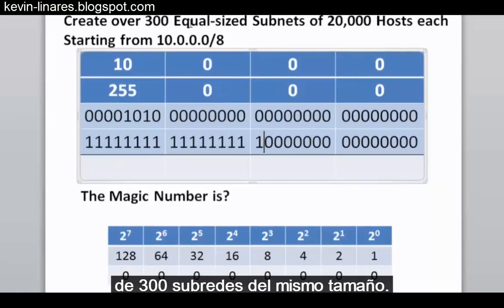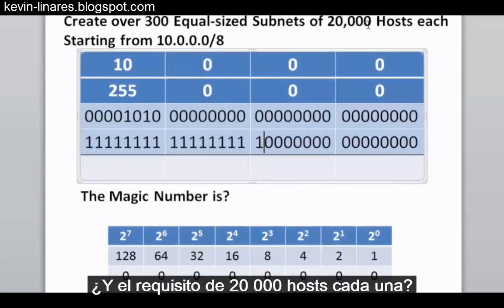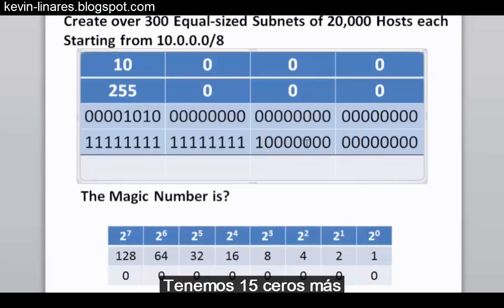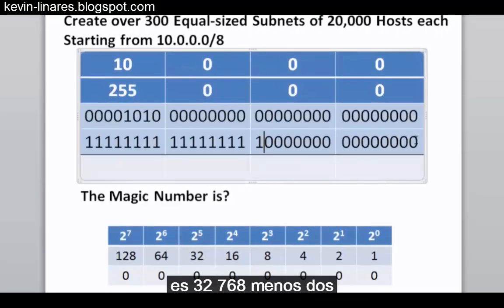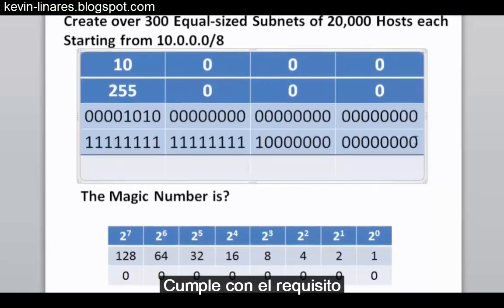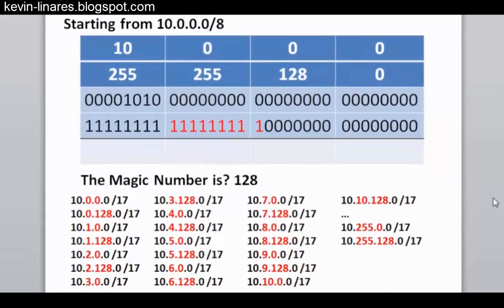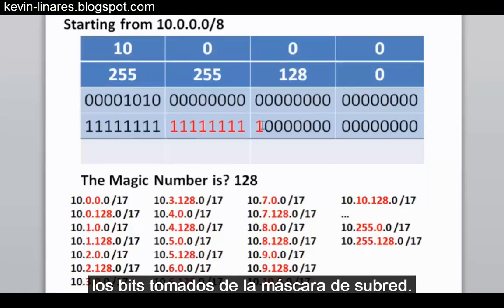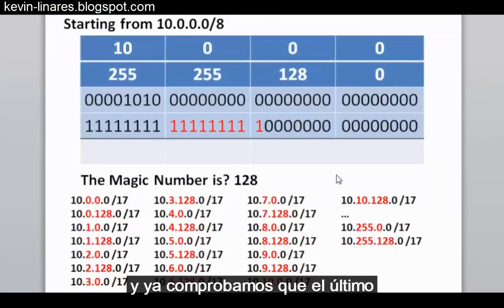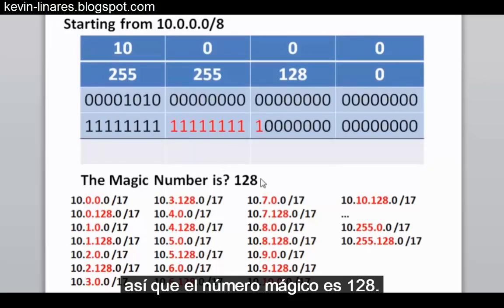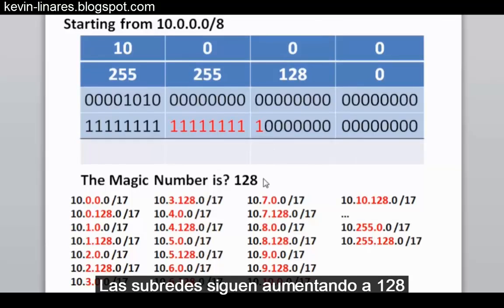What about the requirement of 20,000 hosts each? With 15 zeros left for hosts per subnet, 2 to the 15th power is 32,768, minus 2 gives 32,766 usable hosts per subnet — meeting the requirement of at least 20,000 hosts. The borrowed bits in the subnet mask convert to 255.255.128.0 in decimal, and the last one in the subnet mask is in the 128 place, so the magic number is 128.